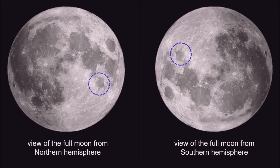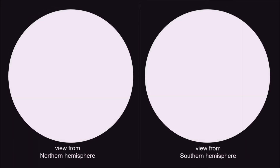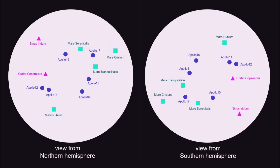How does the full moon look like from the planet Earth's two different hemispheres? Here you see a comparative northern and southern view using a set of selected lunar craters in teal, royal blue, and magenta color codes.